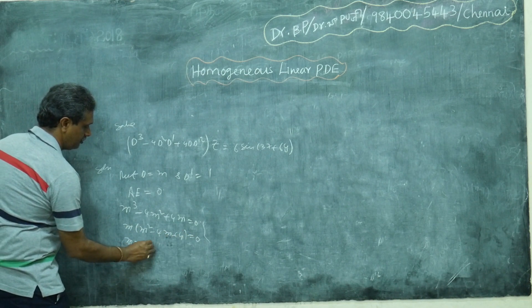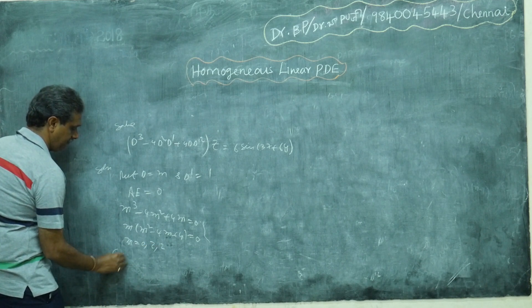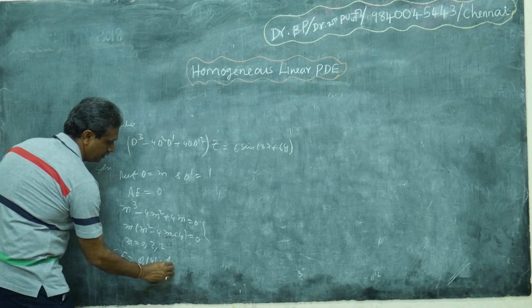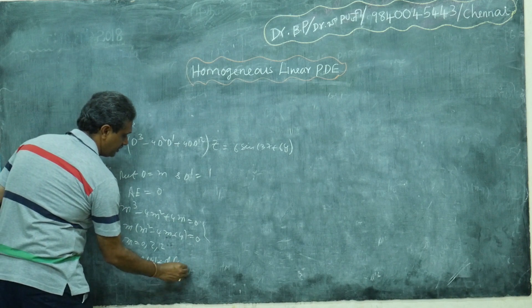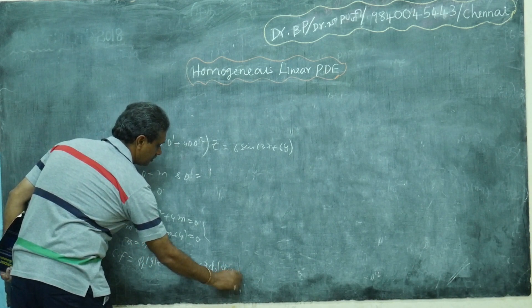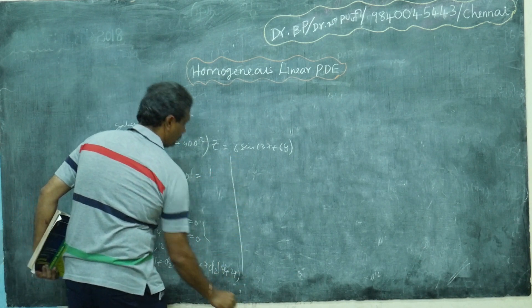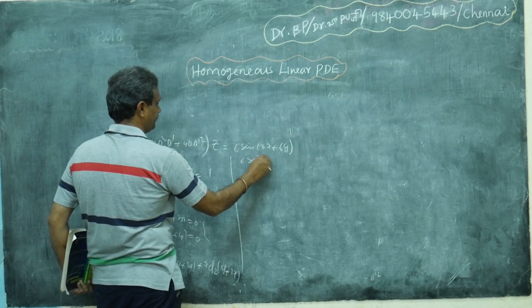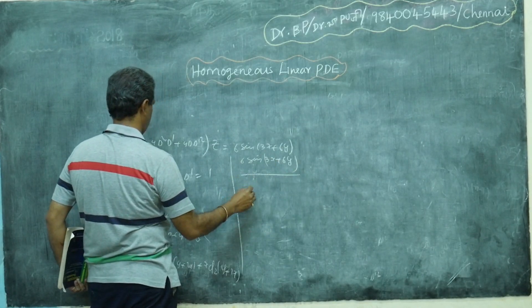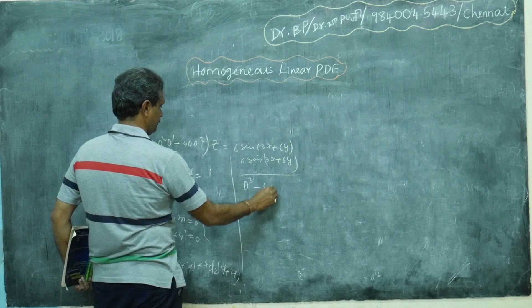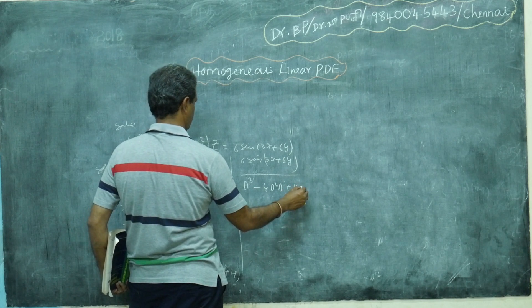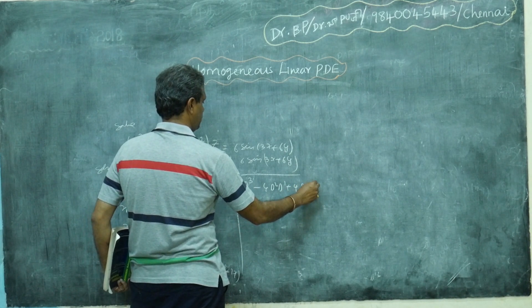This gives m = 0, 2, 2. So the complementary function CF is: φ₁(y) + φ₂(y + 2x) + x·φ₂(y + 2x), since m = 2 is repeating. Now we come to the particular integral PI — the operator is D³ - 4D²D' + 4DD'².